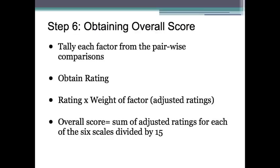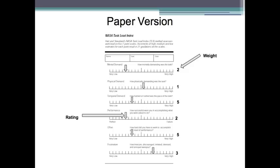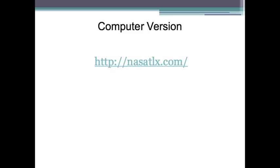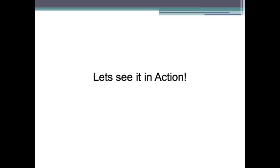To obtain the overall score, the 15 comparison cards are tallied and the respective weights determined. Next, the X's marked on the scale are tallied, and each is associated with a number from 0 to 100 based on where it falls along the scale. This raw rating is combined with the factor weights to give an adjusted rating. All six adjusted ratings are added together and divided by 15 to give an overall score. Keep in mind that there are two versions of the NASA TLX: the paper version, as seen here, and the computer version, which can be found by following this link. Both versions will assess mental workload in the same way.